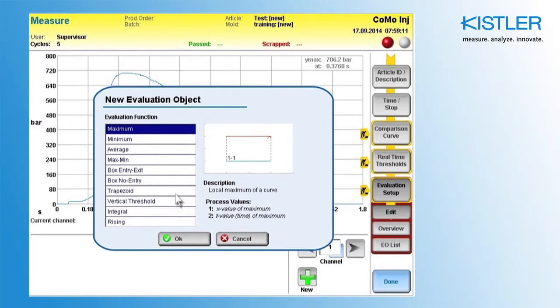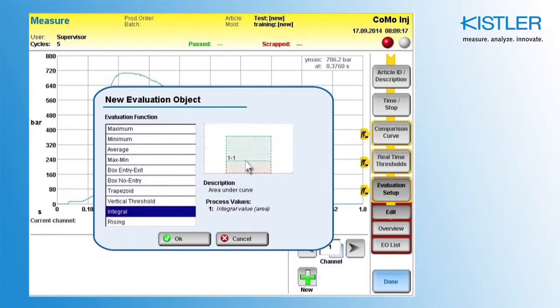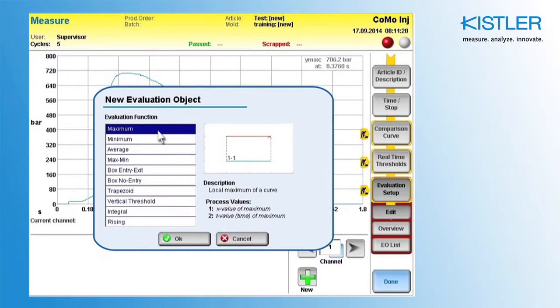You can select the various evaluation elements types on the left side, and then see a preview of the evaluation elements on the right hand side. In this case, select the maximum usually chosen for the detection of part-filled molds.